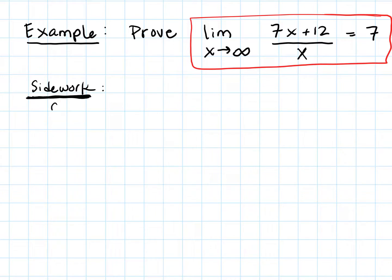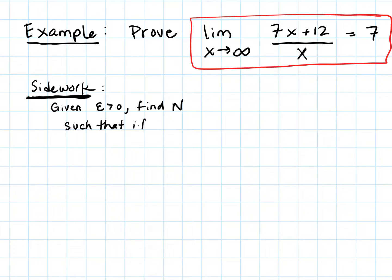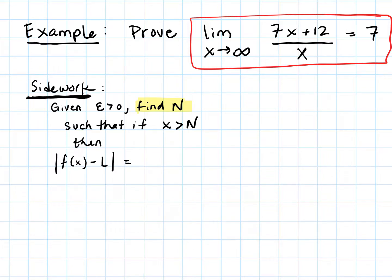In my side work, I'm going to start off almost like a proof and then figure out what I need. So: given epsilon greater than 0, we need to find an N such that if x is greater than N, then — and this is where I take what I want and use it to find what I need. What I need is N. So I'm going to take |f(x) - L|. Our function is right here, approaching 7 as x approaches infinity.